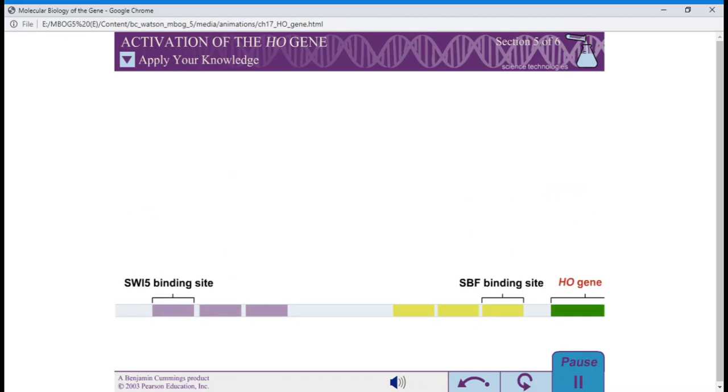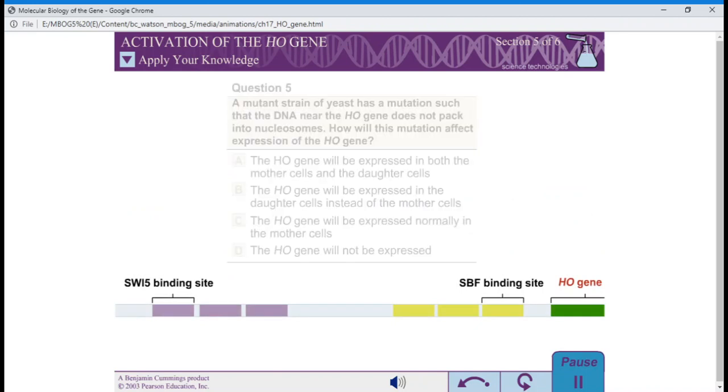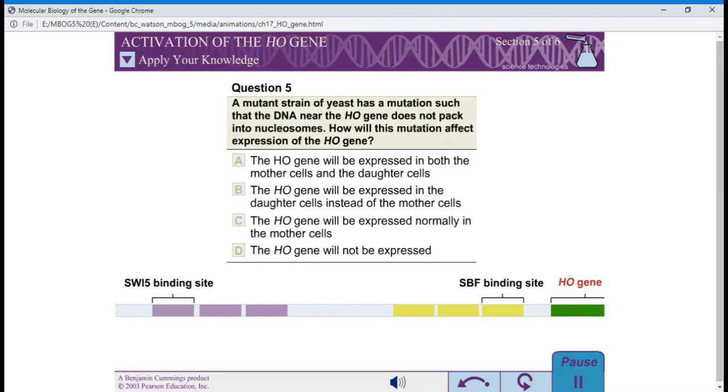Question 5. A mutant strain of yeast has a mutation such that the DNA near the HO gene does not pack into nucleosomes. How will this mutation affect expression of the HO gene?